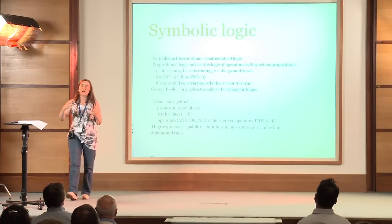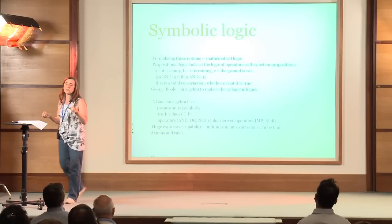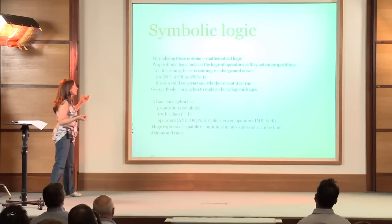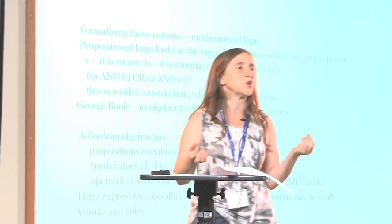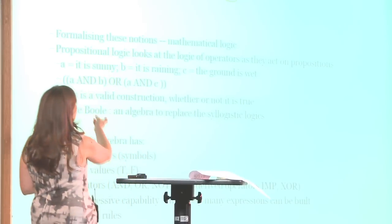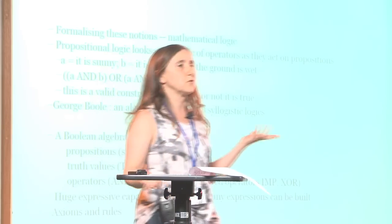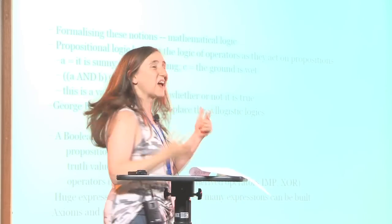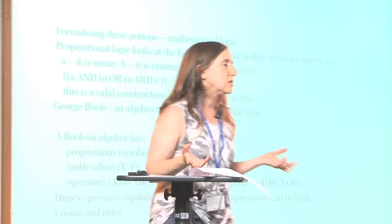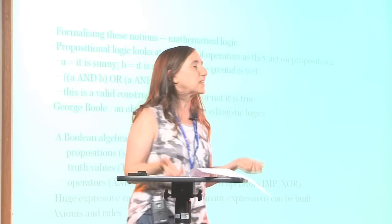Propositional logic was one attempt to formalize. It looks at logic as it acts on propositions. A is a proposition, B is a proposition — a proposition is something we propose that may be true or may be false. Propositional logic looks at how we can combine them: A is true and B is true, or A is true and C is true. A, B, and C can each take the values true or false. It is a fairly simple form of logic, and it was found not to be sufficient for expressing a lot of things.